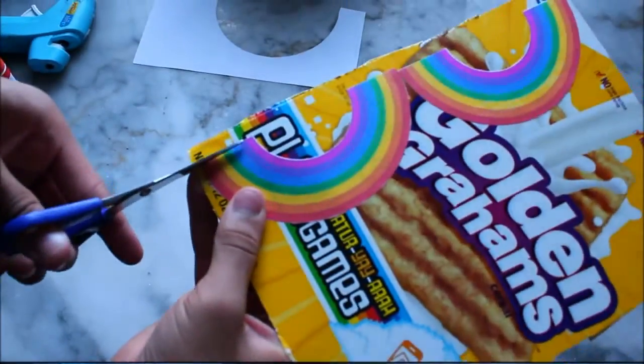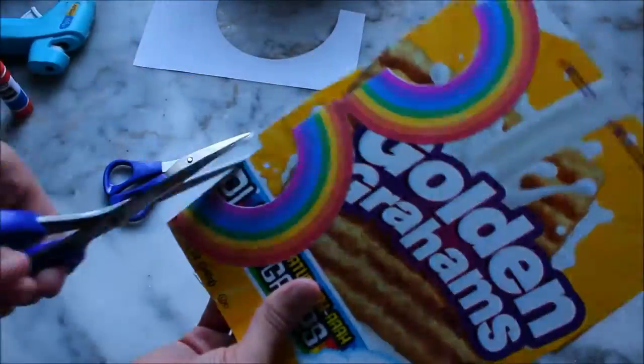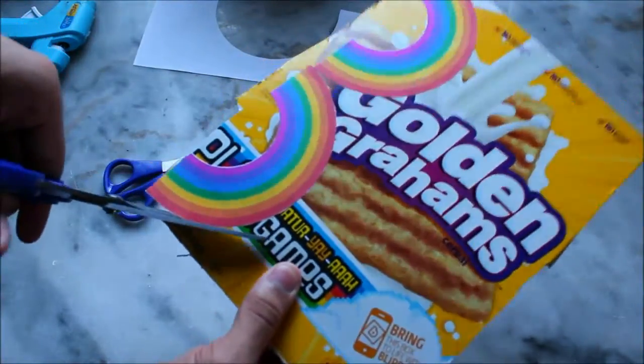Next, once you have your rainbows on the cardboard, you're going to take some scissors and cut out the rainbows.